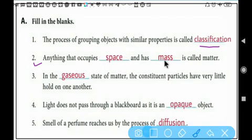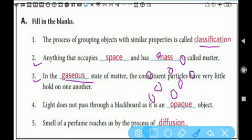Number three: in the gaseous state of matter, the constituent particles have very little hold on one another. In the gaseous state because in gases the particles are far apart, there are gaps between them, they are not tightly packed.